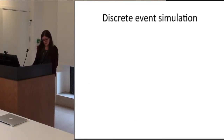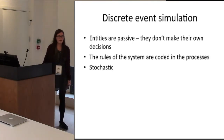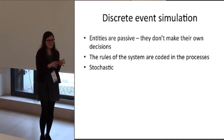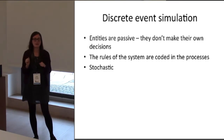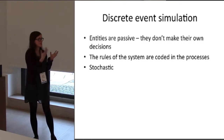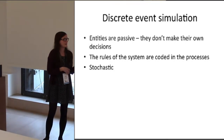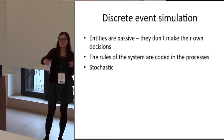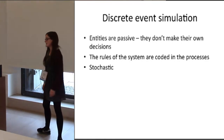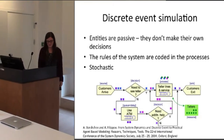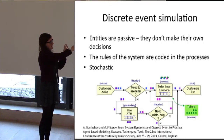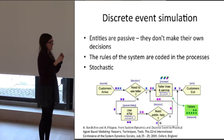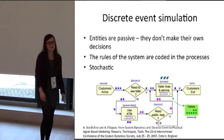There's also discrete event simulation. I think of these as kind of similar to agent-based modeling; however, the agents — or entities, which they'd be better described as — don't have autonomy, they're just passive, they just go through the system, and all the processes are coded within the steps of the system. It's also stochastic. Here, not a very archaeological example, but it's going through a bank, and the dots — you could think of them as agents — just go through the process and there's a result at the end.